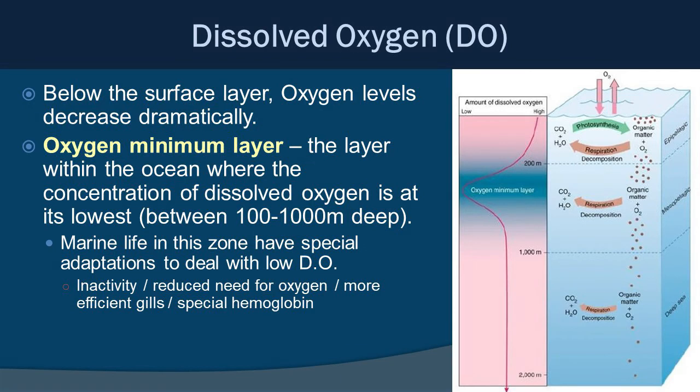Below the surface, oxygen levels decrease rather dramatically. We give this a special name: the oxygen minimum layer or zone — the layer within the ocean where dissolved oxygen is at its lowest, usually between 100 and 1,000 meters deep. Marine life in this zone must have special adaptations, including inactivity, reduced need for oxygen, reduced metabolic rates, more effective and efficient gills, and specialized amounts of hemoglobin.